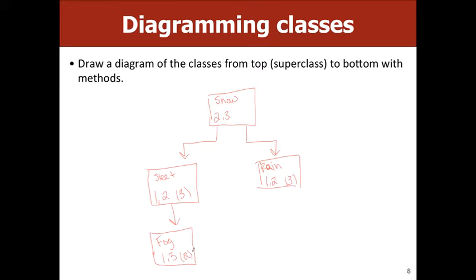Then figure out which methods are inherited. Every subclass of snow has methods 2 and 3. So sleet must inherit 3, rain must inherit 3, and fog must inherit 2. The question about which method 2 fog inherits: it inherits from the closest superclass, which is sleet, not snow.